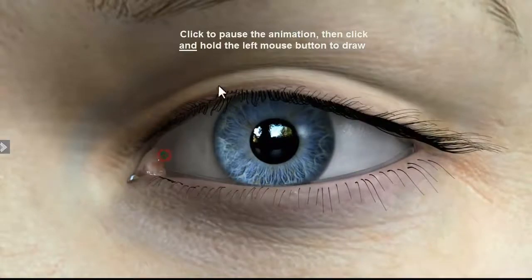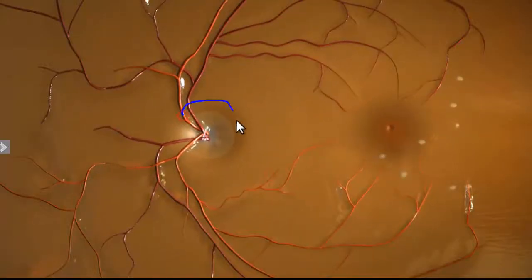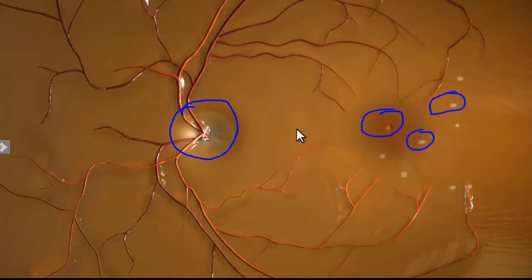In this case, we can explain that AMD doesn't occur at the front of the eye. If we fly through the eye, AMD occurs on the retina and we can highlight and draw over the optic nerve and macula and even pinpoint the drusen that we see here.